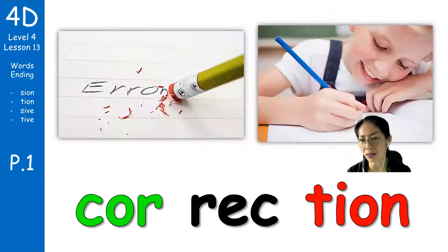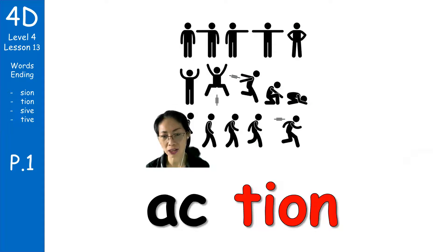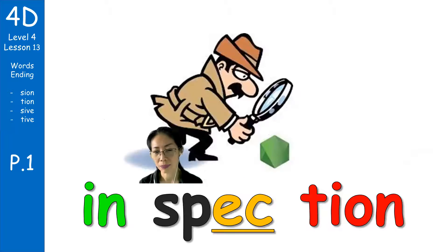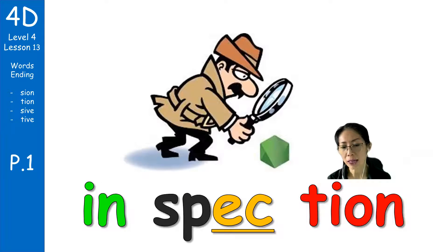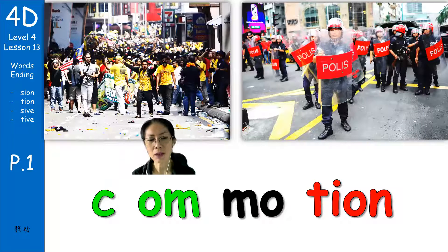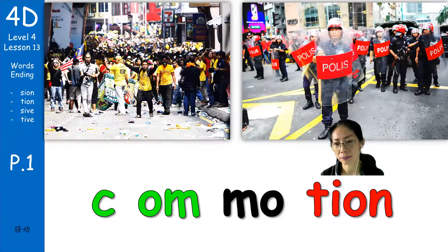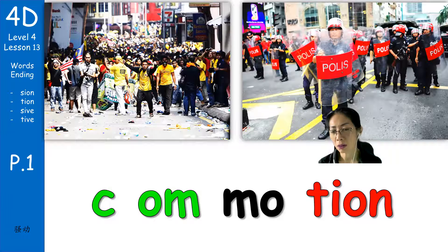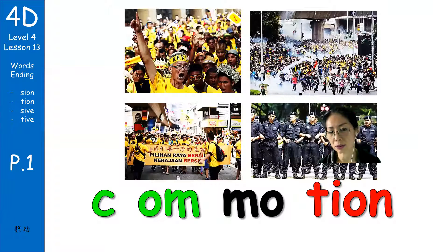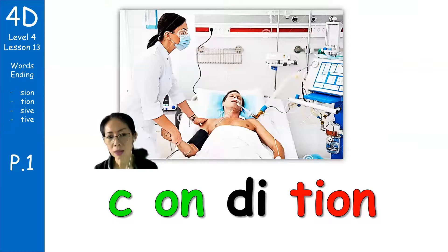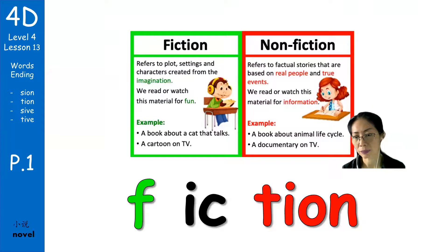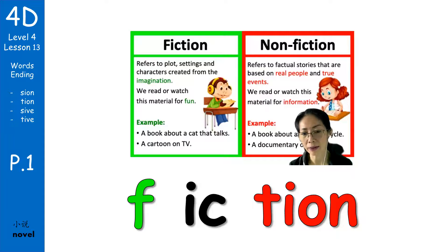Attention — 注意, attention. Correction. Movement, action — action, action. Commotion: people making noise on the street, gathering together, not going to work. So many people that the police want to come into action to control — commotion. Condition. Fiction — fake story, fiction.